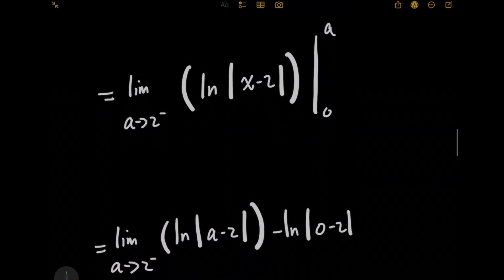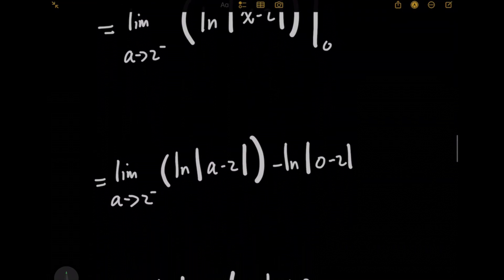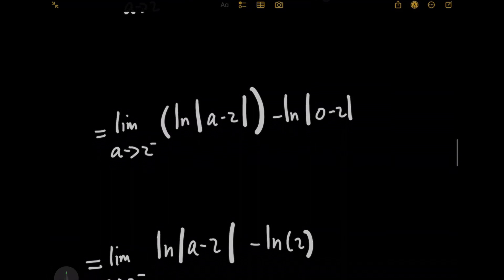So when you plug in the upper limit of integration, we're now going to have the limit as A approaches 2 from the left of the natural log of the absolute value of A minus 2. And after plugging in x equals 0 for the lower limit of integration, this part on the right is just going to become a constant. There's no limit associated with it.